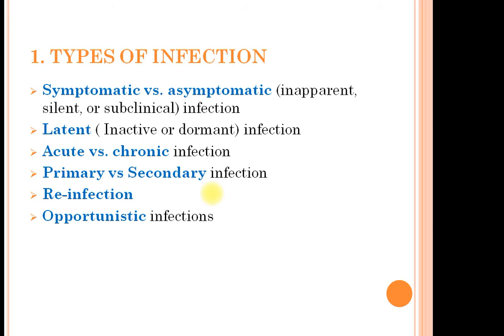Infections can also be classified on the basis of the signs and symptoms they produce. When the infection has its classical signs and symptoms, that is called symptomatic infection. On the other side, asymptomatic infection is that infection where the symptoms are absent — the person appears to be normal, so they are a threat to the community. Asymptomatic infections are also called inapparent, silent, or subclinical infection.